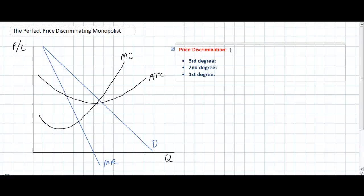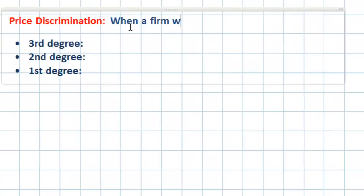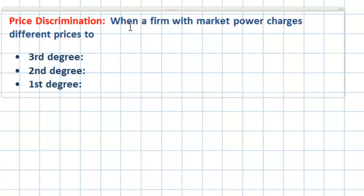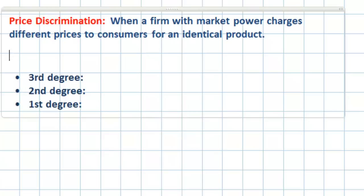Price discrimination refers to when a firm with market power charges different prices to consumers for an identical product. The key term here is different prices to consumers for an identical product.